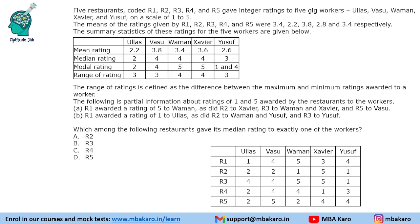Which among the following restaurants gave its median rating to exactly one of the workers? We need to find the median rating of each restaurant and count how many workers received that median. R1: values 1, 3, 4 — median is 4, given to 2 people. R2: 1, 1, 2 — median is 2, given to 2 people. R3: 1, 4, 4 — median is 4, given to 2 people. R4: 1, 2, 3 — median is 3, given to only 1 person. R5: 2, 2, 4 — median is 4, given to 2 people. So the answer is R4, which gave its median rating to only one worker.